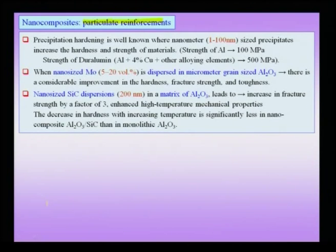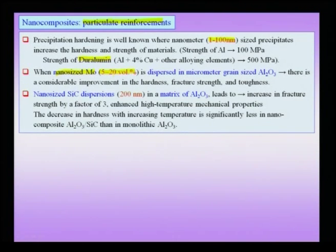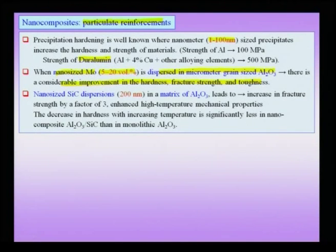We have already talked about precipitation hardening, such as duralumin with precipitates of 1 to 100 nanometers. Another example is nano-sized molybdenum at a volume fraction of about 5 to 20 percent dispersed in micrometer grain-sized alumina. Here the grain size of alumina is not in the nano scale — only the molybdenum reinforcement is. There is considerable improvement in hardness, fracture strength, and toughness, enhancing overall properties of alumina, which as a ceramic is prone to brittle fracture with small fracture toughness.